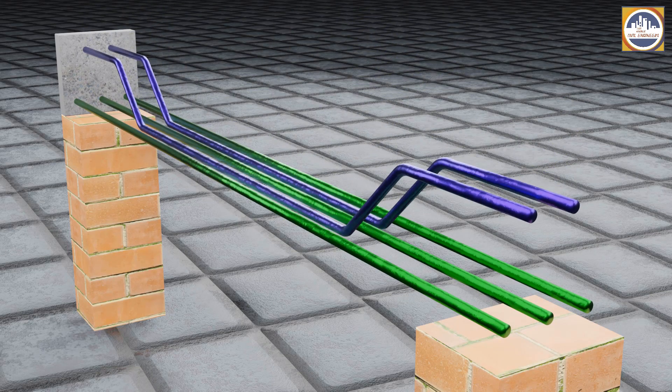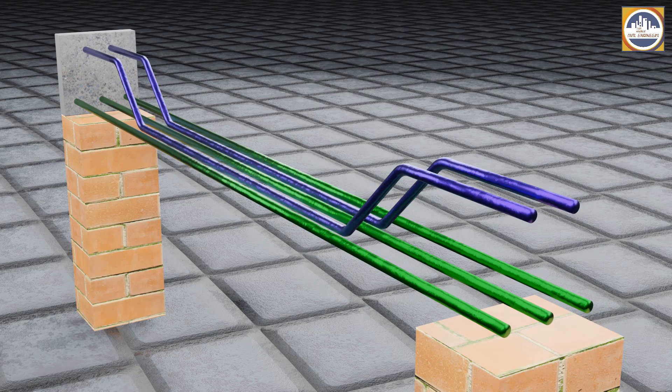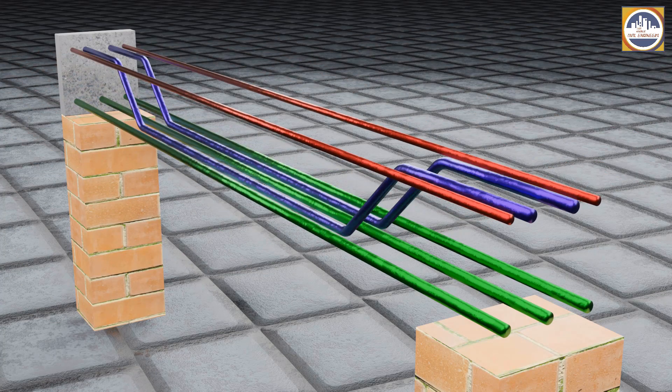And now these blue color bars are the main cranked bars or those will also be called as bent up bars which will be bent up at the ends at an angle of 45 degrees.